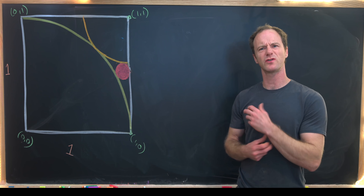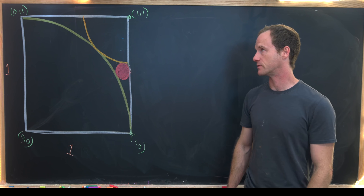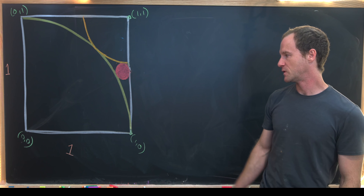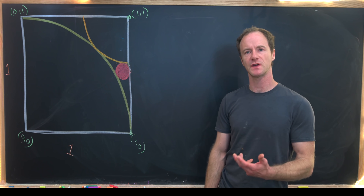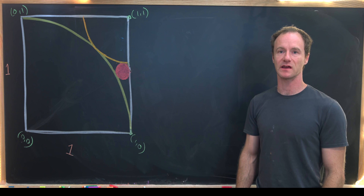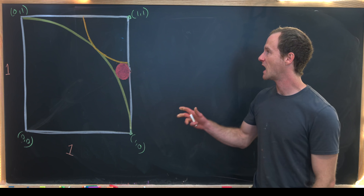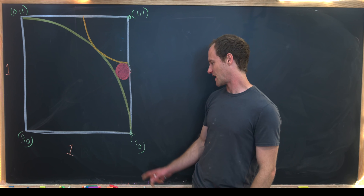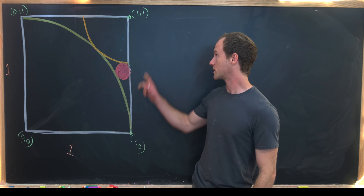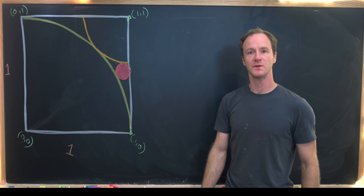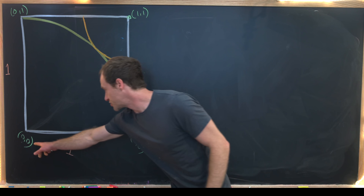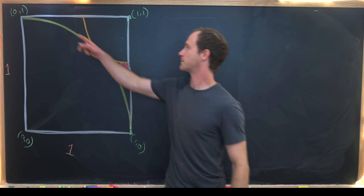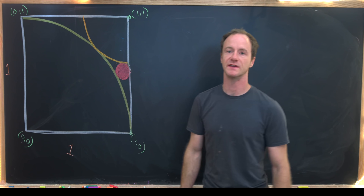Here I've got a pretty nice little geometry problem. We have a unit square — a square with side length 1 — placed within the Cartesian coordinate plane with coordinates at all of the vertices. The origin is at one corner, 1,0 here, 1,1 here, and 0,1 over there.